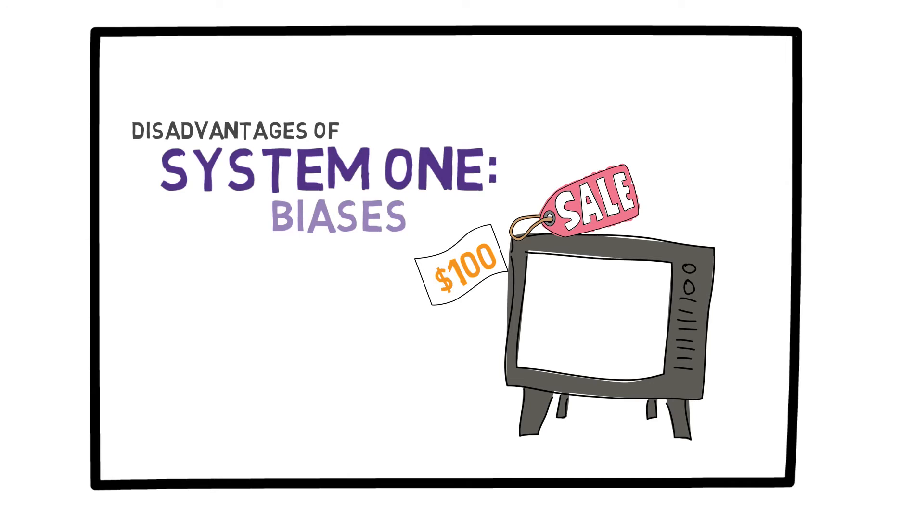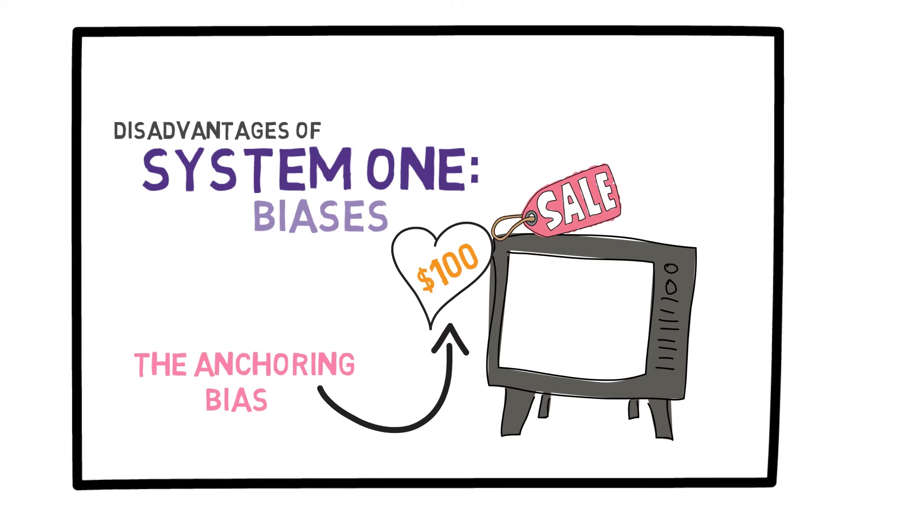You are more likely to buy the item this time, at 50% off, because the original price of $200 acts as an anchor. Compared to $200, $100 is a more attractive price. System 1 can be quite helpful, but it is important to be mindful of such flaws and biases.